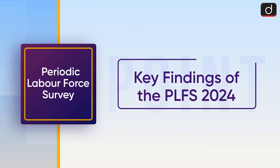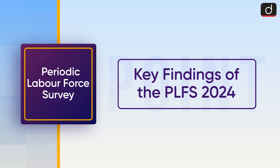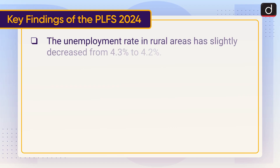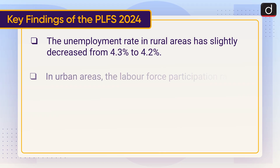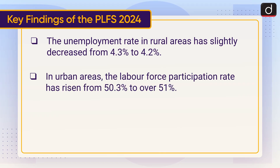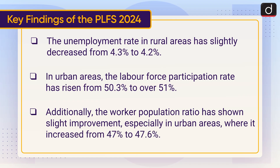Now let's talk about key findings of the PLFS 2024. The unemployment rate in rural areas has slightly decreased from 4.3% to 4.2%. In urban areas, the labour force participation rate has risen from 50.3% to over 51%. Additionally, the worker population ratio has shown slight improvement, especially in urban areas where it increased from 47% to 47.6%.